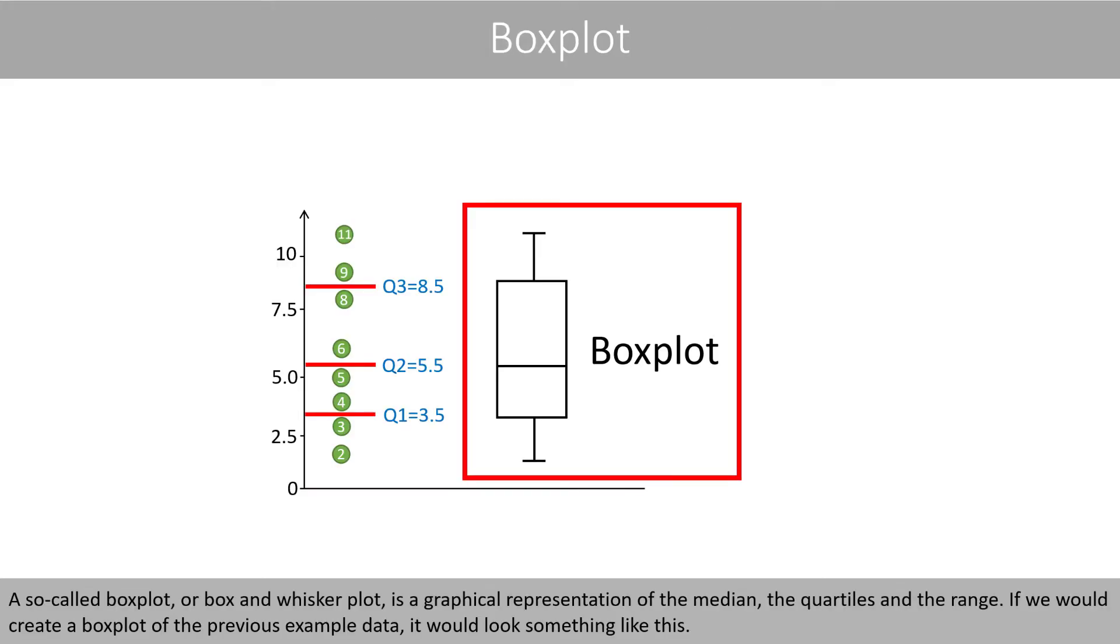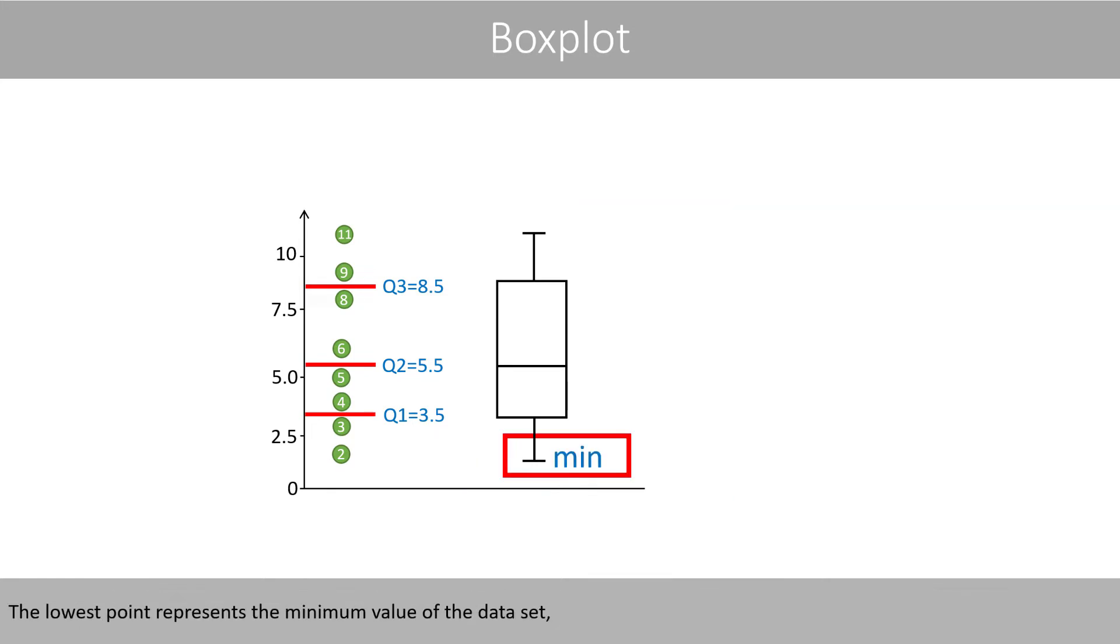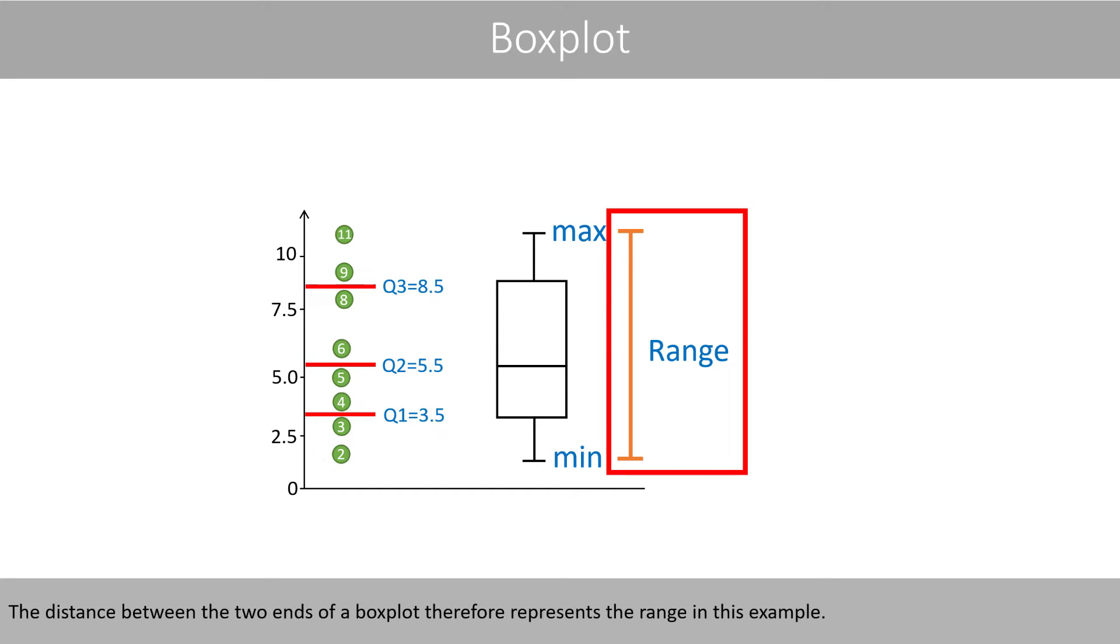A so-called box plot, or box and whisker plot, is a graphical representation of the median, the quartiles and the range. If we would create a box plot of the previous example data, it would look something like this. The lowest point represents the minimum value of the dataset, whereas the maximum point represents the maximum value of the dataset. The distance between the two ends of a box plot therefore represents the range.